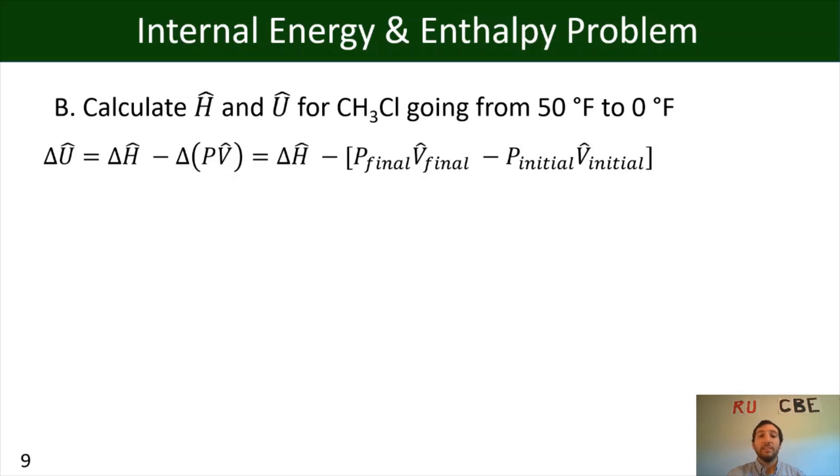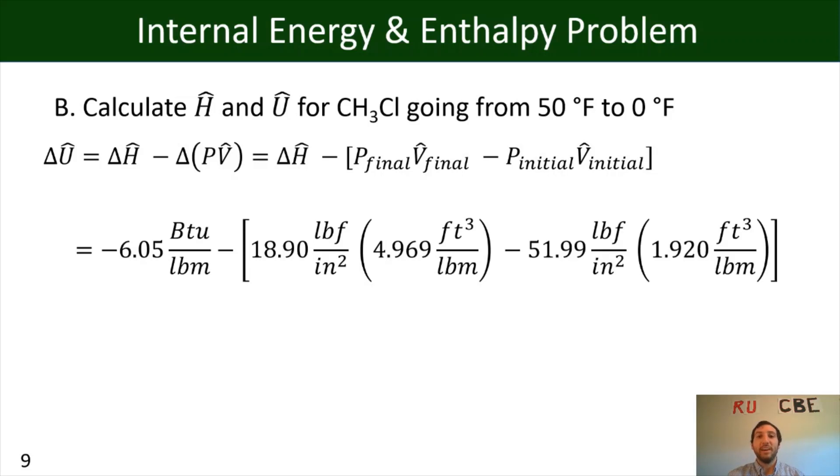So if we substitute in our values for the system, we know that we have negative 6.05 BTUs per pound mass for the specific enthalpy. For P final, V final, if you read from the table, you should get 18.9 multiplied by 4.969 and then subtract out 51.99 times 1.92. And if we combine all those values together, what we'll get is negative 6.05 BTUs per pound mass minus negative 5.9067 times pound force per inches squared times foot cubed per pound mass. And as you might notice, those units are not the same as BTUs per pound mass.